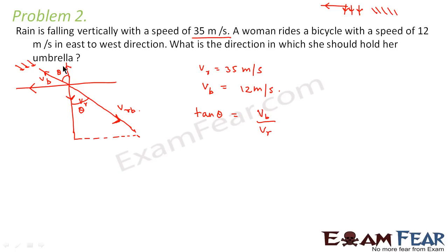You can consider it in this sense also. Here also, this is the perpendicular that is vb and this is the base that is vr. You consider this triangle, that will make it easier for you to understand. Let us suppose this. So what is tan theta? Perpendicular that is vb and base that is vr. So it is vb by vr. So what is vb? vb is 12 and vr is 35.